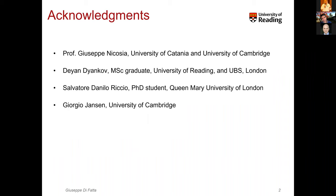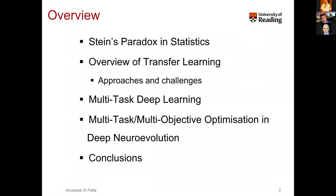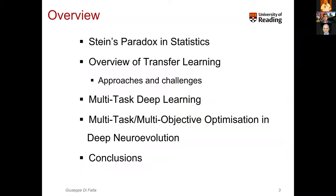The presentation today will give you an overview of transfer learning, starting from the simplest, most straightforward and earliest example of multi-task learning. I will start from a science paradox in statistics, which will demonstrate a very easy and straightforward example of this approach, this paradigm. I will give you an overview of transfer learning in general, the approach used in transfer learning, and the challenges we are still facing in this field.